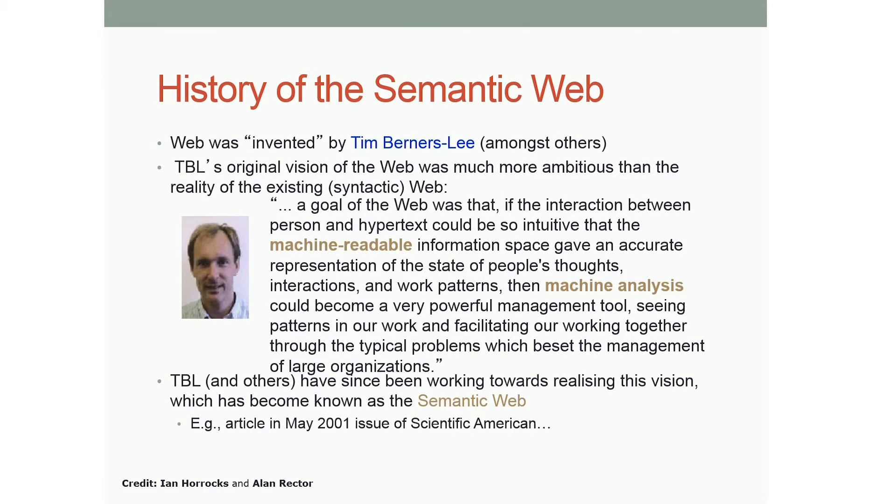But currently what we have, basically, we can browse the internet, read the documents, click the links, but a lot of tasks we have to do by ourselves. About 13 years ago, they published a paper in Scientific American and proposed the idea of the semantic web. The vision is that every piece of information is semantically indexed, so that a computer program can interpret or understand the data online better.